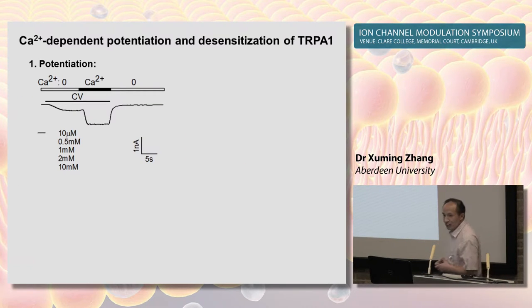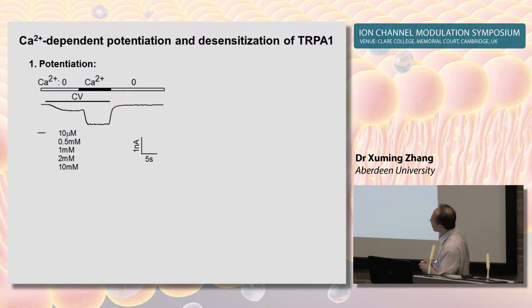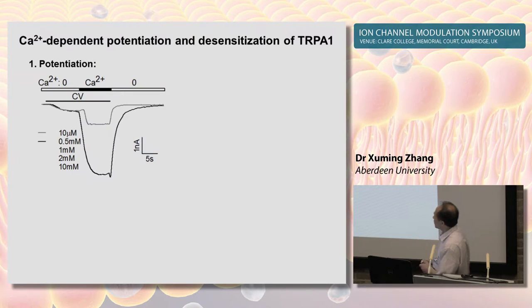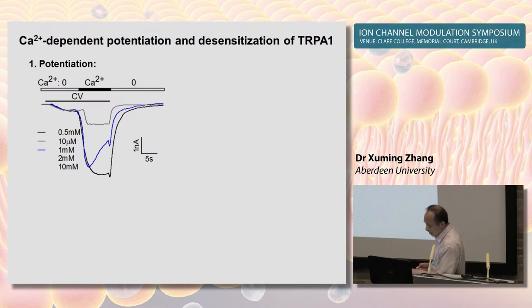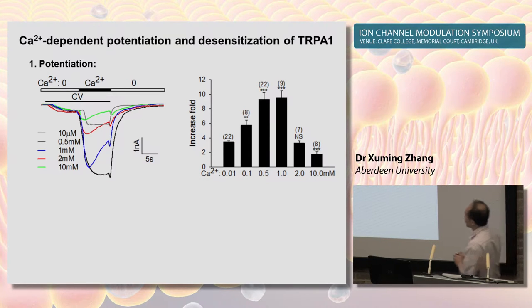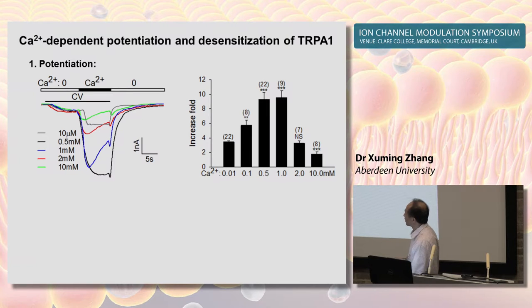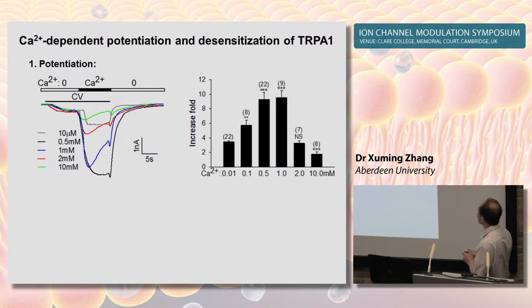To monitor TRPA1 activation by calcium in real time, we first activated a small TRPA1 current using the agonist carvacrol at nominally zero calcium. We then applied approximately 10 µM calcium shortly after. Applied calcium rapidly potentiated the currents. Increasing applied calcium to 500 µM caused even stronger potentiation. However, further increases in calcium caused a progressive reduction in potentiation, as seen more clearly from the summary of this experiment. At higher calcium such as 1 mM, TRPA1 currents rapidly desensitized, which presumably explains the reduced potentiation seen at higher calcium.